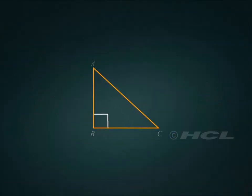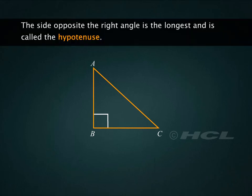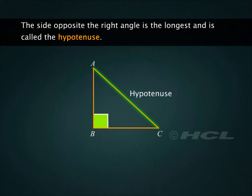Look closely at this triangle. Which side is the longest? In a right-angled triangle, the side opposite the right angle is the longest and is called the hypotenuse. Since angle B is the right angle, the side opposite to it, that is AC, is the longest. Side AC is the hypotenuse of triangle ABC.